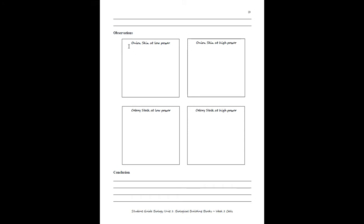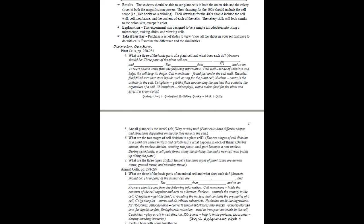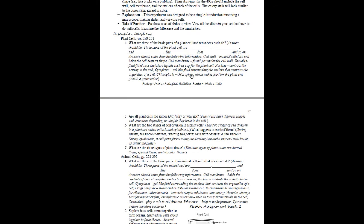Remember, observations are things they see and results are things they measure. In this particular experiment they're not doing any measurements, so there's no space for results. In your guide you will have what the student should see — the expected results, an explanation of what they should have observed during the experiment, the science behind it, and ideas to take it further. Then the next thing you'll have is discussion questions — written so you don't necessarily have to have read the material yourself. You'll be able to ask the student, for example, what are the three basic parts of a plant cell, and you'll have the answers provided.